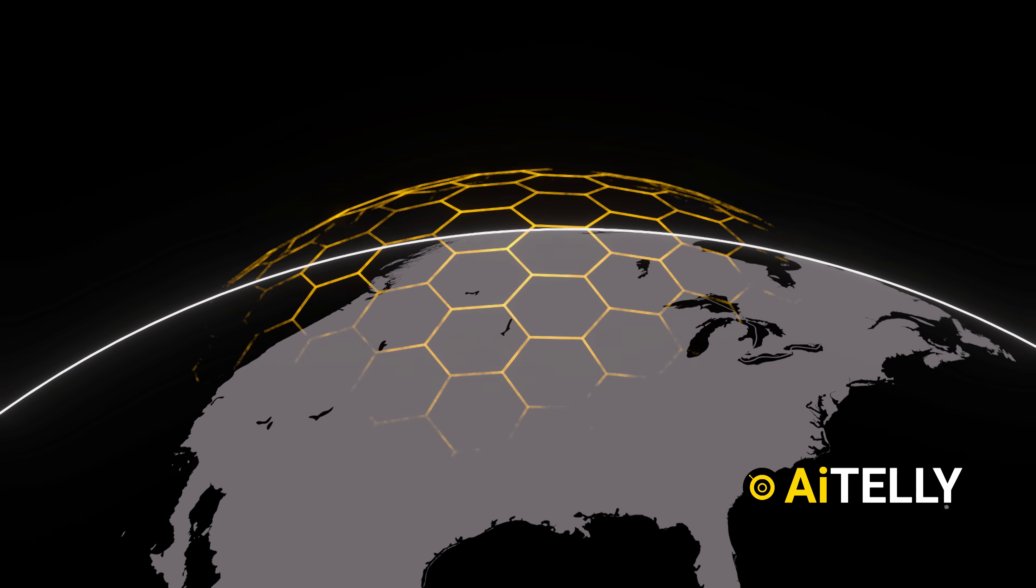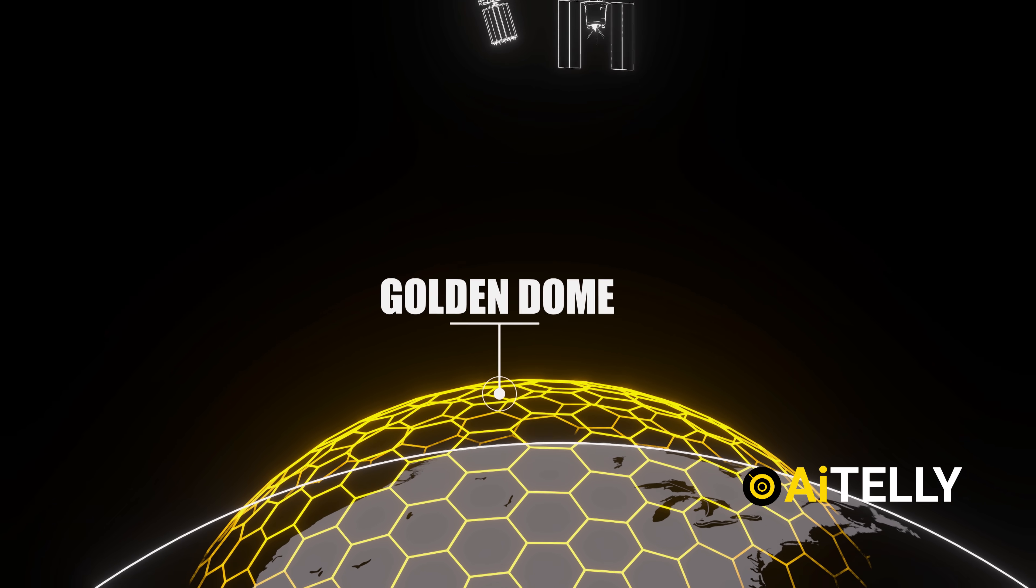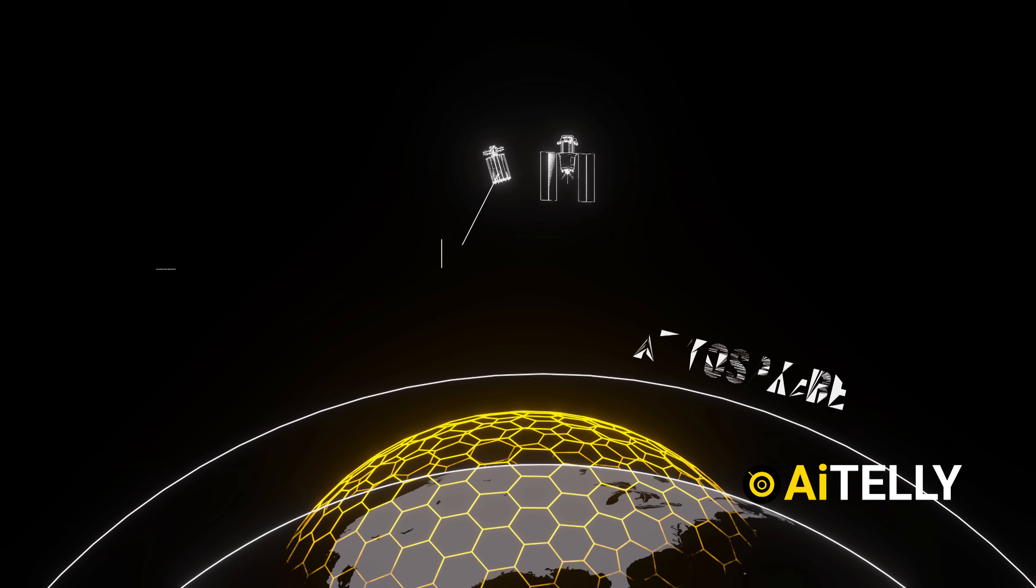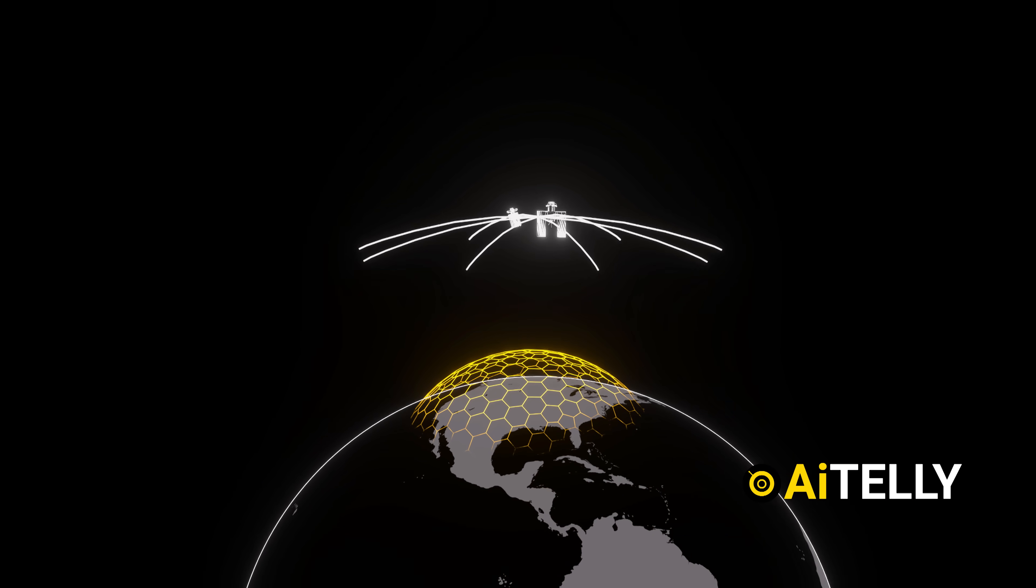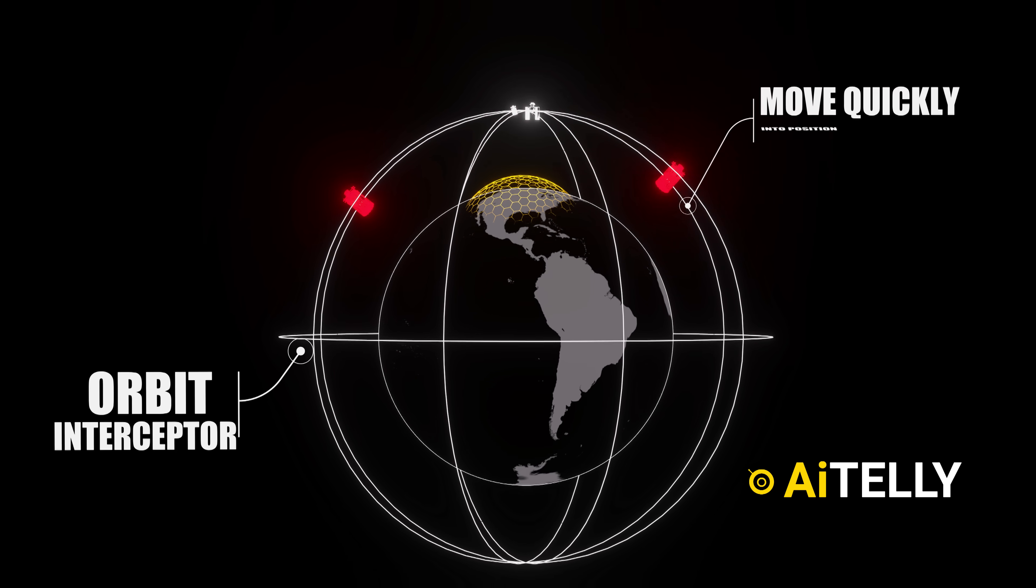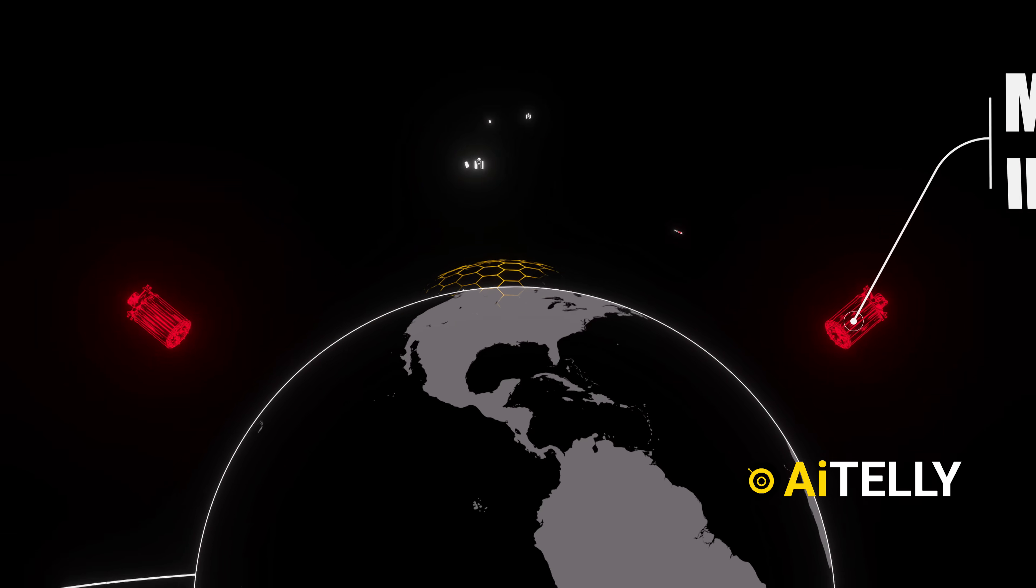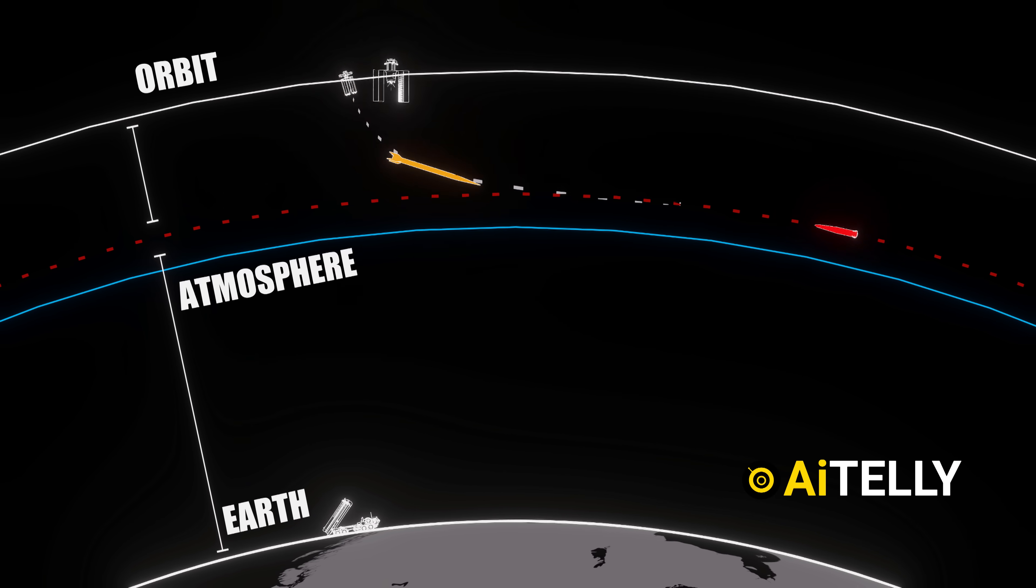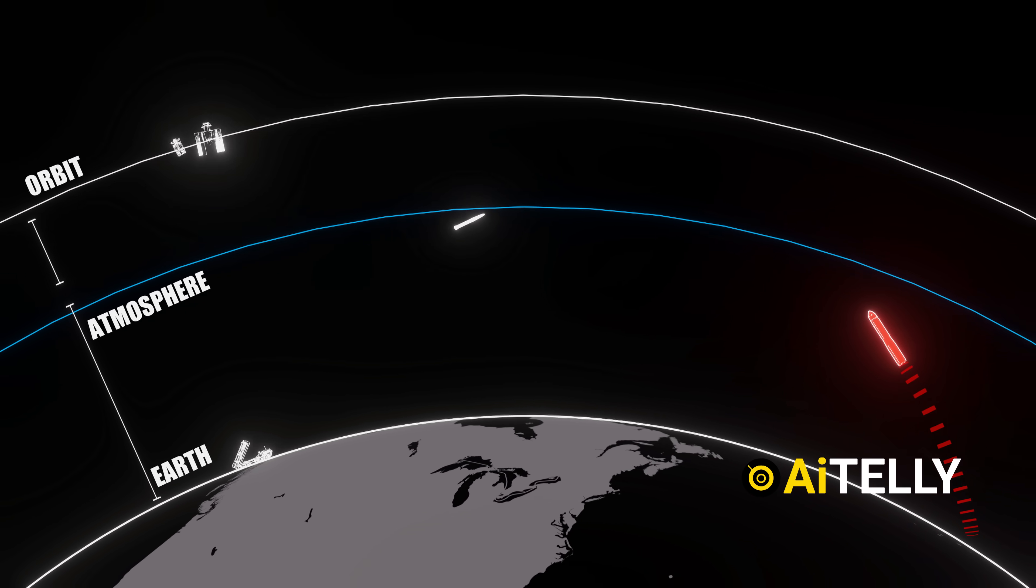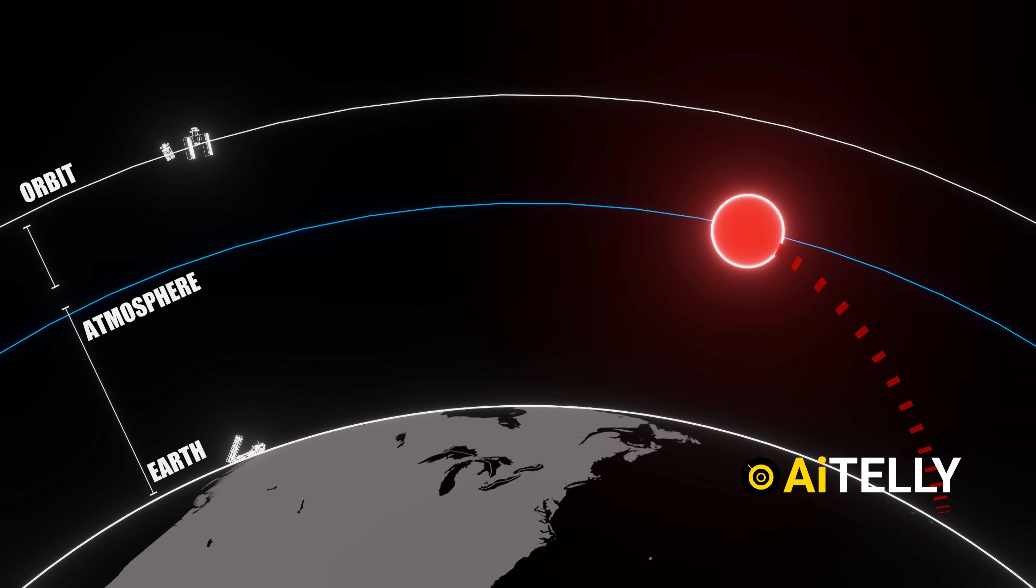One of the most groundbreaking features of the Golden Dome is its plan to position interceptor weapons in space, just above the atmosphere. These interceptors aren't tied to the ground. Instead, they are already in orbit, strategically stationed, and ready to move quickly into position. Their closeness to possible missile flight paths means they can react nearly instantaneously, giving defenders a real chance to intercept missiles during those early, most vulnerable moments after launch.